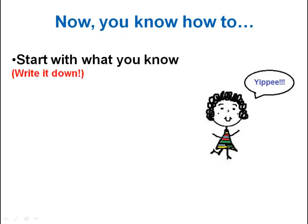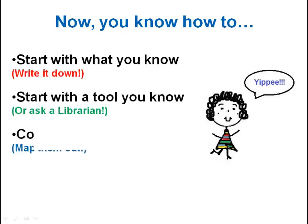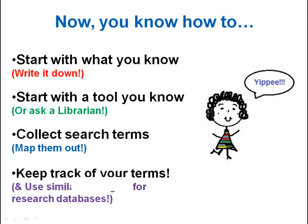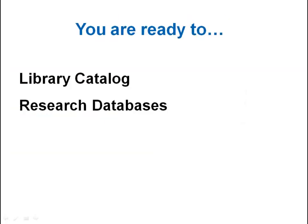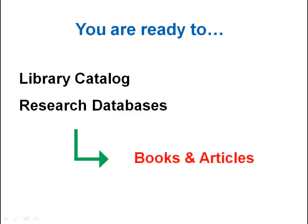Start with what you know. Start with a tool that you know. Read and expand upon your search terms list. Keep track of the words you try, and continue to harvest search terms from your reading. Now with your search terms list, you are ready to deepen your knowledge of your topic by using the library catalog or research databases to find other useful sources like books and articles.